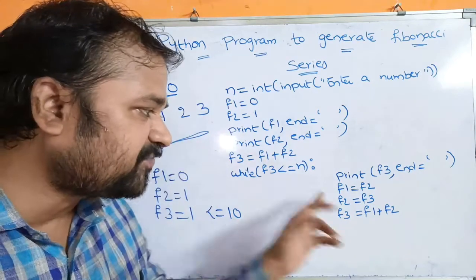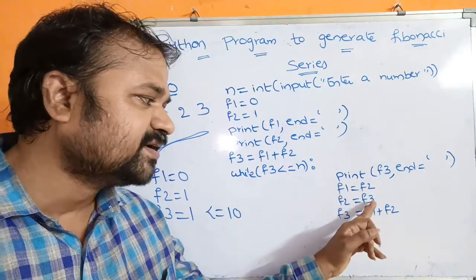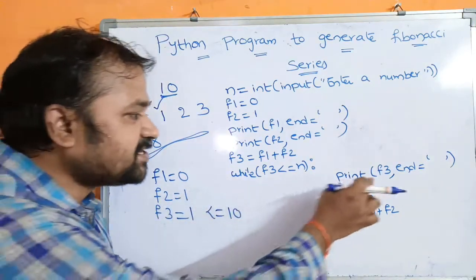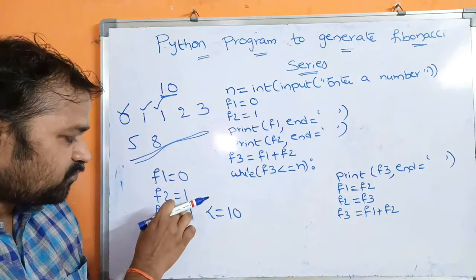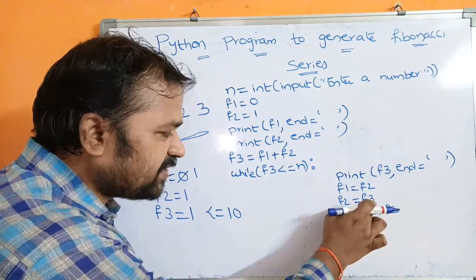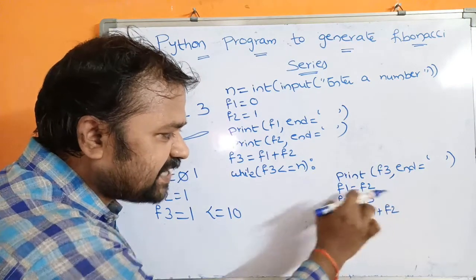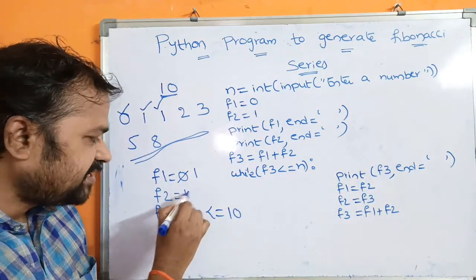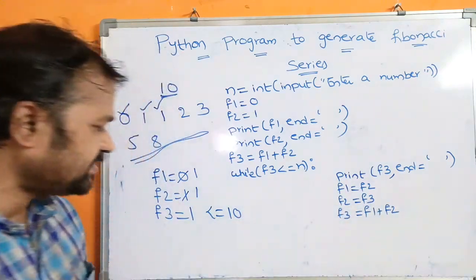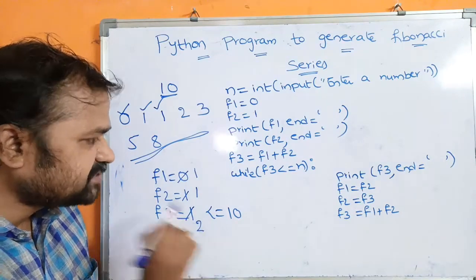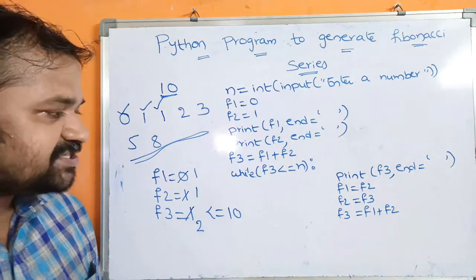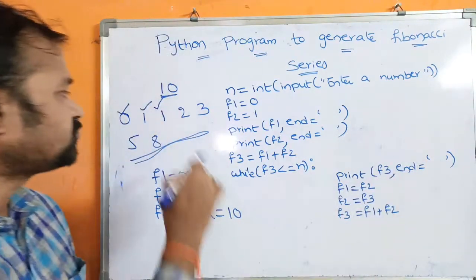Next we have to perform the swapping. So we store f2 in f1, and store f3 in f2. Then compute the next f3 value. So f1 is equal to f2 — f2 value is 1, so 1 is stored in f1. Next f2 is equal to f3 — f3 value is 1, so 1 is stored in f2. Next f3 is equal to f1 plus f2, so 1 plus 1 means 2. Once again control goes to the while loop — 2 is less than or equal to 10, condition is true, so 2 will get printed.